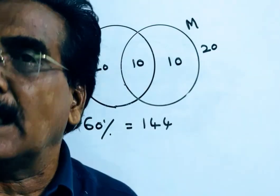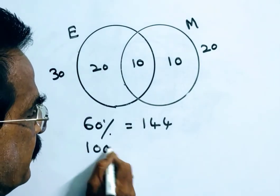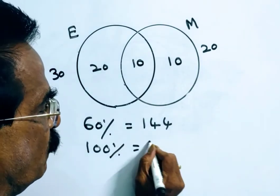Now we want the total number of students. That is, we have to find 100 percent. So 60 percent is equal to 144.